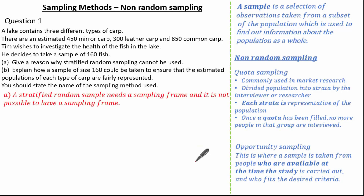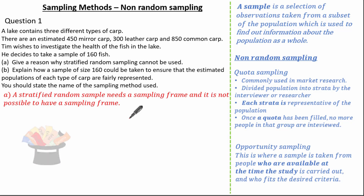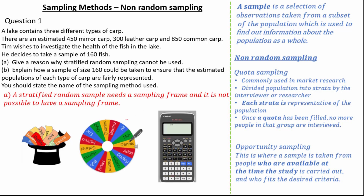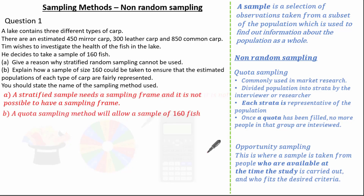To answer part A: stratified random sampling cannot be used because it needs a sampling frame, and it's not possible to have a sampling frame here. We can calculate how many of each type of fish should be sampled, but we cannot name or number each fish and then randomly select them using a spinner, hat, or calculator. So a sampling frame is not possible, and therefore stratified random sampling cannot be used. The best method is quota sampling, as it will allow a sample of 160 fish reflective of the population structure.